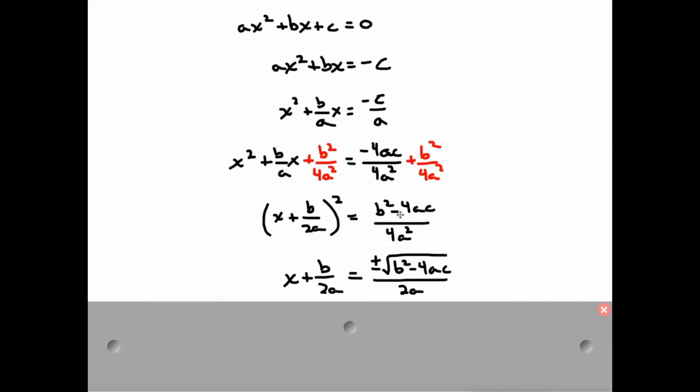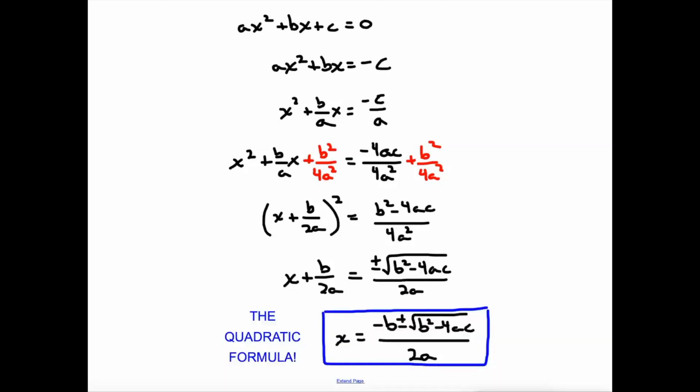Then I took the square root of both sides. So on the right, the square root of b² - 4ac, I just left it as an irrational. And on the bottom, the square root of 4a² is 2a. And then I subtract b over 2a from both sides. And you get this, the quadratic formula.